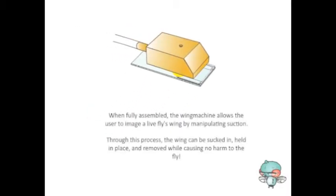When fully assembled, the Wing Machine allows the user to image a live fly's wing by manipulating suction. Through this process, the wing can be sucked in, held in place, and removed while causing no harm to the fly.